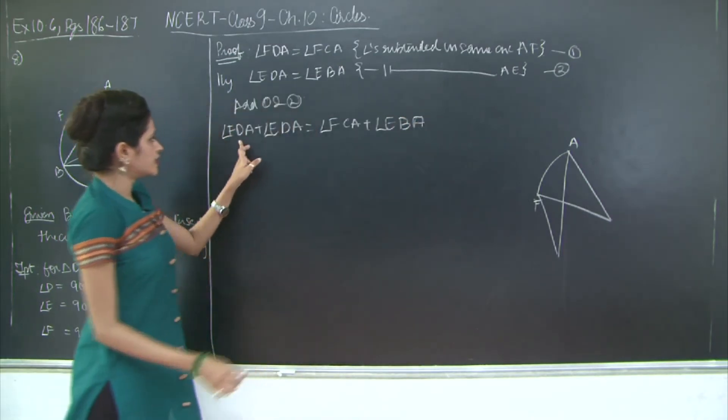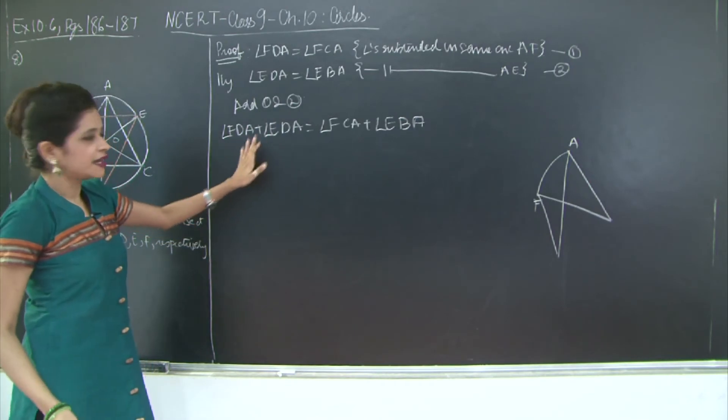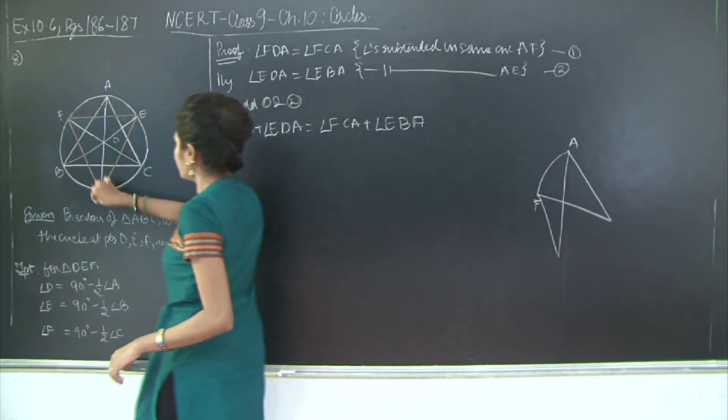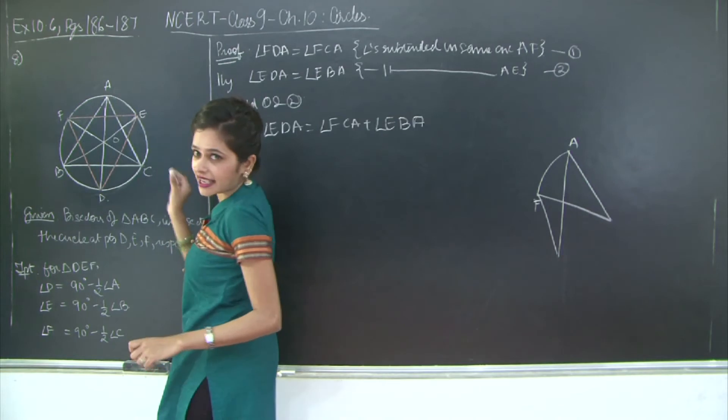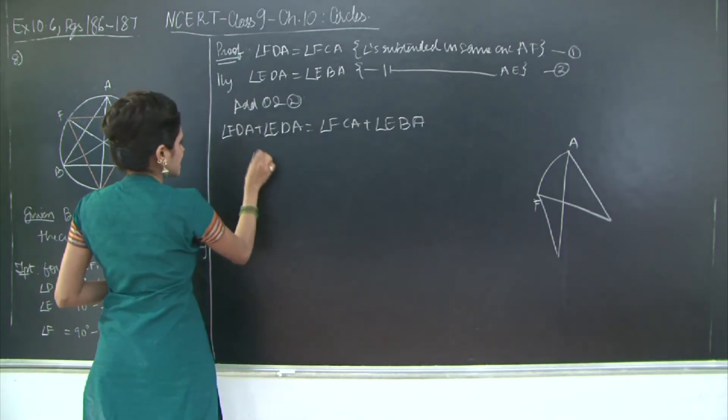Right? So this is what FDA plus EDA is, this angle. FDA plus EDA is angle D. So I will write this as angle D.